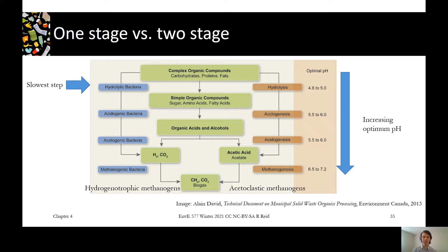We know our overall reaction of organics to methane plus CO2, but that doesn't all happen by one microbe at once. There's a whole community of microbes in here. They work together and pass along their products until we get all the way to the bottom. So the first thing that happens is we have these big organic molecules — those need to get chopped up into smaller organic molecules that are more metabolizable by other bacteria.